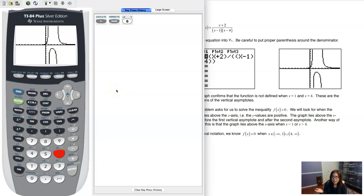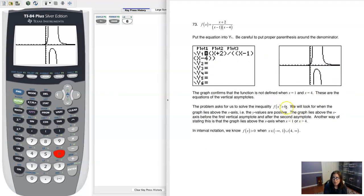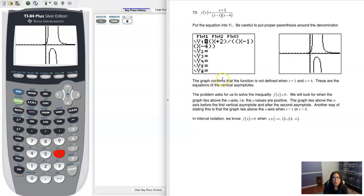Above the x-axis and below the x-axis translates into f of x being greater than 0 if your graph is above the x-axis, and f of x being less than 0 if it's below the x-axis. So another way of stating this is that the graph lies above the x-axis when x is less than 1 or x is greater than 4. But we're going to write that up in interval notation.